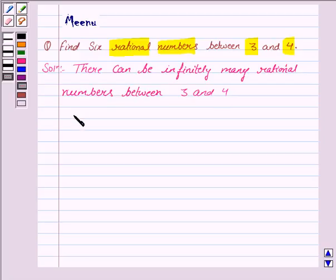So, let's find out 6 of them. Let us first express 3 in the form of a rational number. Now, 3 can be written as 21 upon 7.